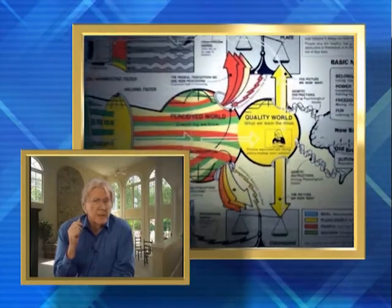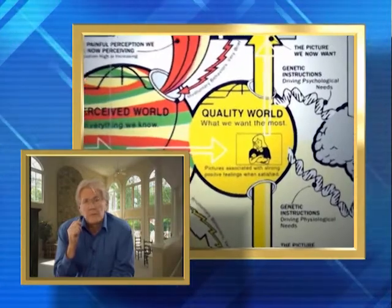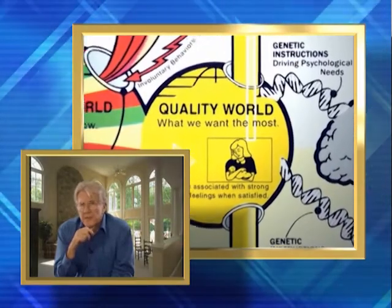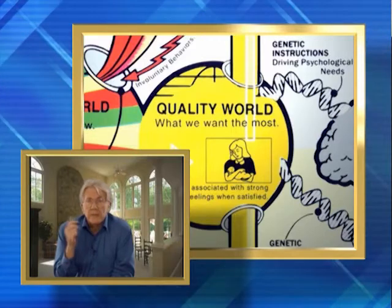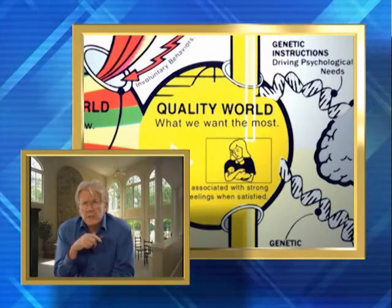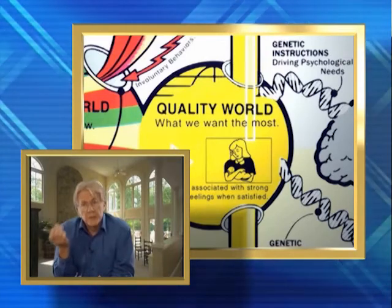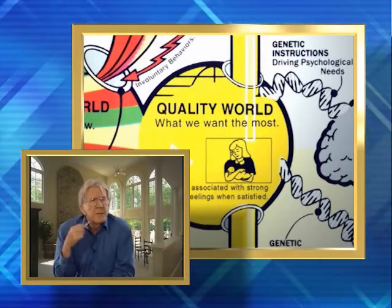So it is these basic needs that seem to drive the behaviors we choose. Yes, we work to meet these needs by following what Dr. Glasser calls our quality world pictures, which are mental models which represent the actual people, things, and beliefs that we've learned will fulfill these needs. These pictures are not abstractions, but images of what exists in the real world. For example, we do not search for love — we search for a specific person to love who loves us. These pictures are stored in what is called the quality world because in it are all the people, things, ideas, and ideals that we have discovered will increase the quality of our lives.